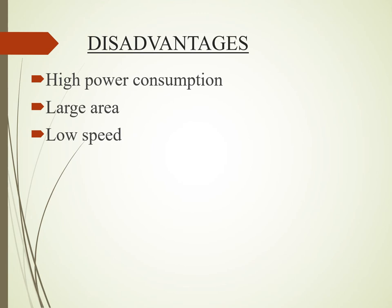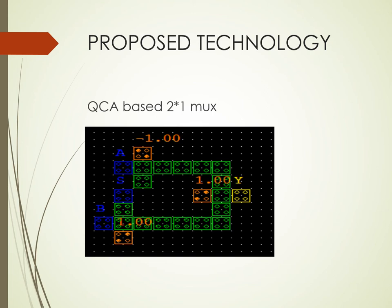As discussed earlier, QCA technology uses a basic QCA cell. In the diagram, you can see the QCA-based 2x1 multiplexer — our proposed technology, which overcomes the drawbacks of the previous technology. The cells have different colors: blue represents inputs, green represents data transformation, and yellow represents the output, to differentiate the different parameters.